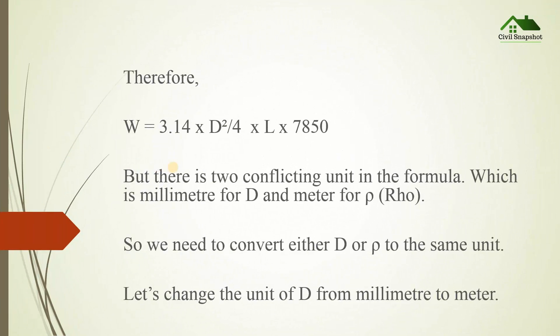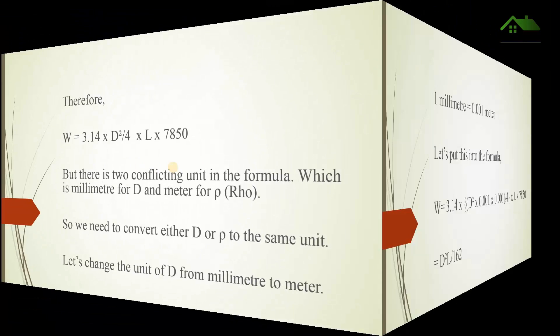Therefore, W = 3.14 × D²/4 × L × 7850. But there are two conflicting units in the formula: millimeter for D and meter for ρ. So we need to convert either D or ρ to the same unit. Let's change the unit of D from millimeter to meter.